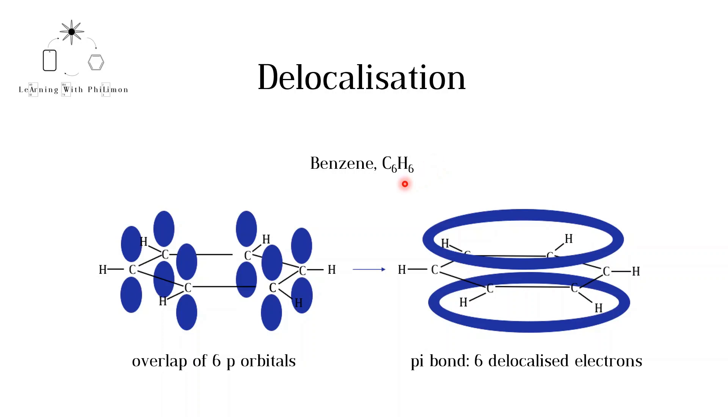overlap forming a molecular orbital with electron density below and above the ring. The six electrons originally occupying the atomic orbitals can now move across the whole ring in this molecular orbital.